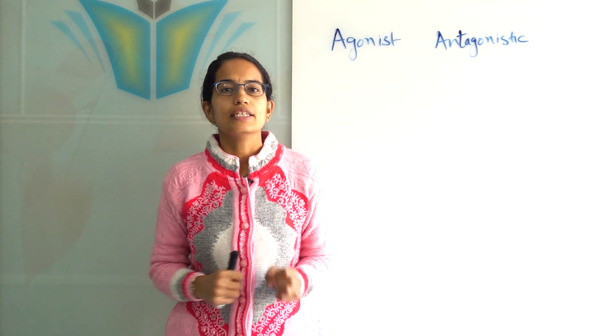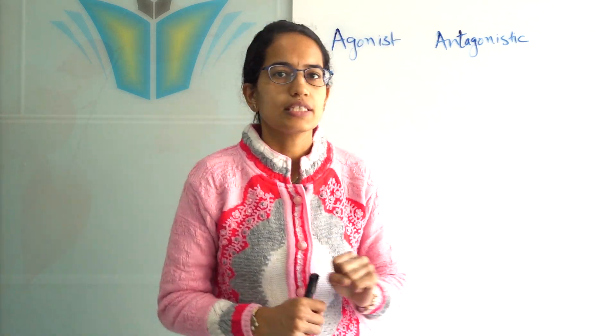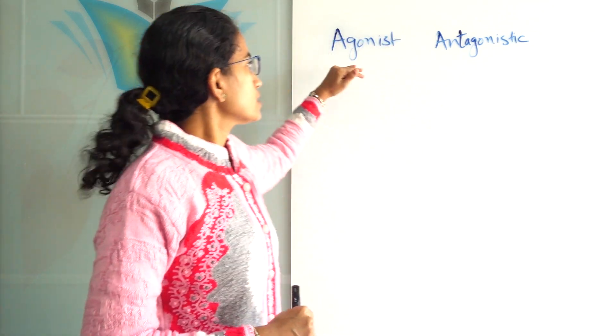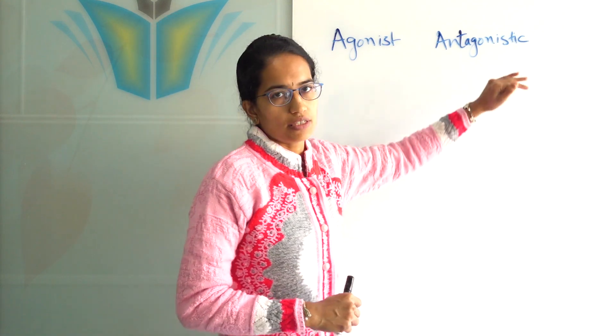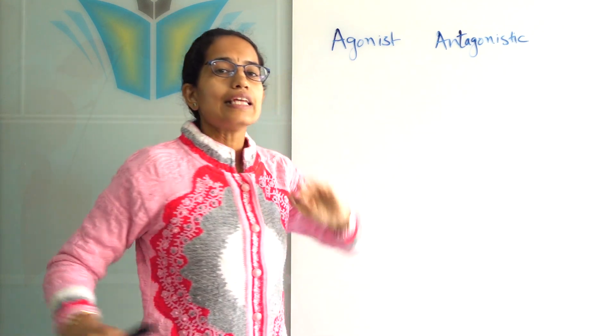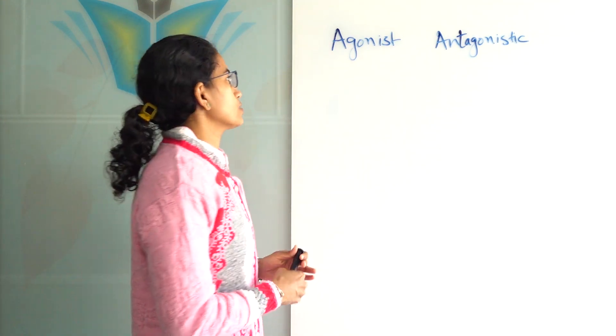When we understand muscles, there are two types of muscles: agonist muscles and antagonistic muscles. Let's understand the difference between the two.